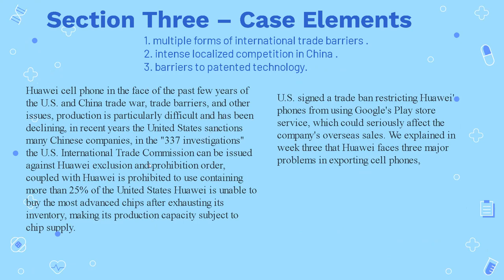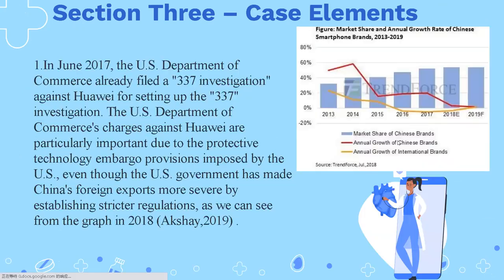Coupled with Huawei being prohibited from using components containing more than 25% U.S. technology, Huawei is unable to buy the most advanced chips after exhausting its inventory, making its production capacity subject to chip supply. The U.S. also signed a trade ban restricting Huawei's phones from using Google's Play Store service, which could seriously affect the company's overseas sales.